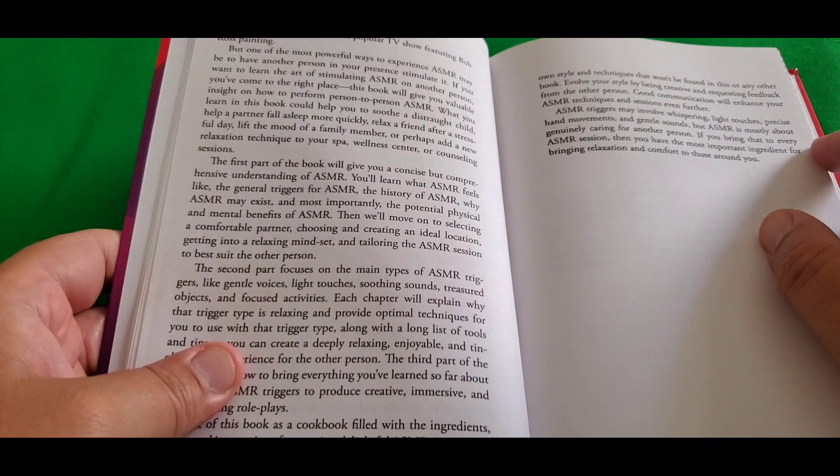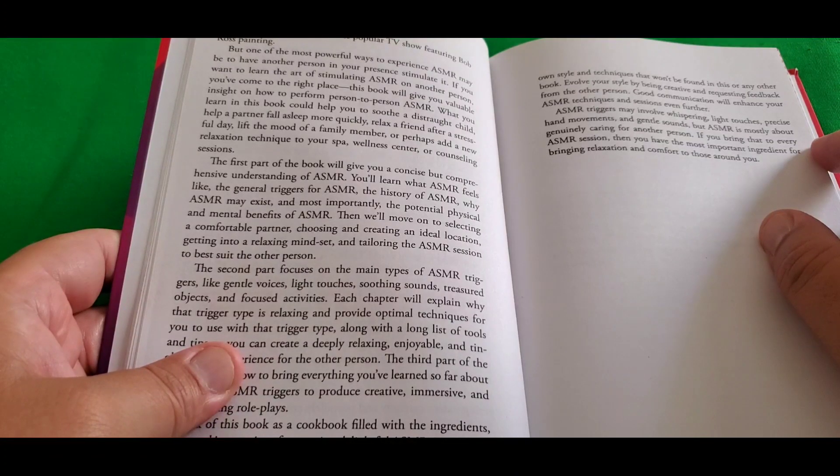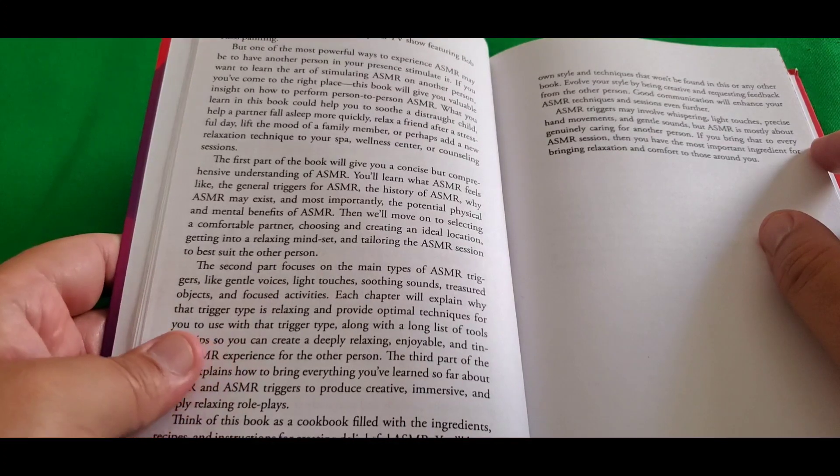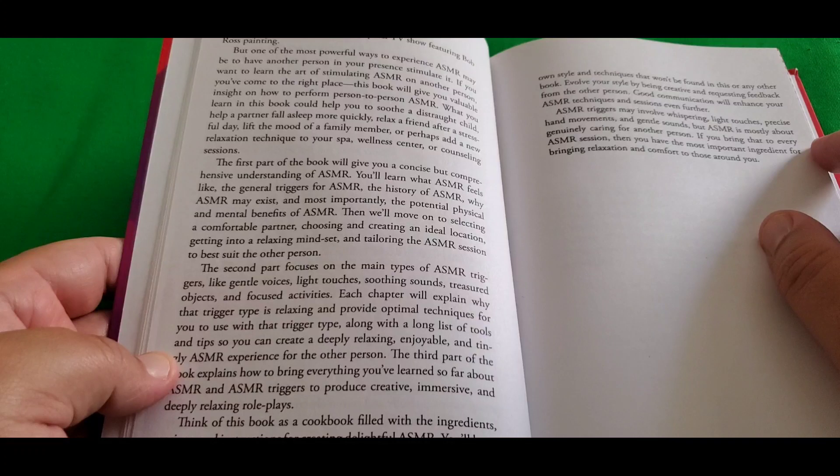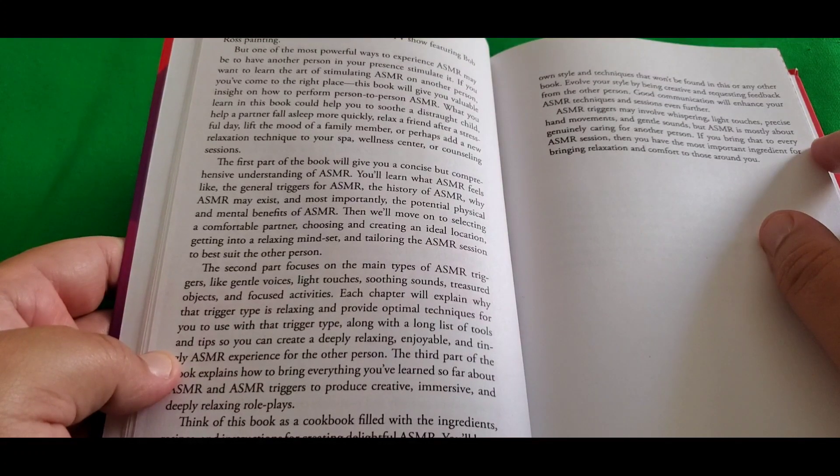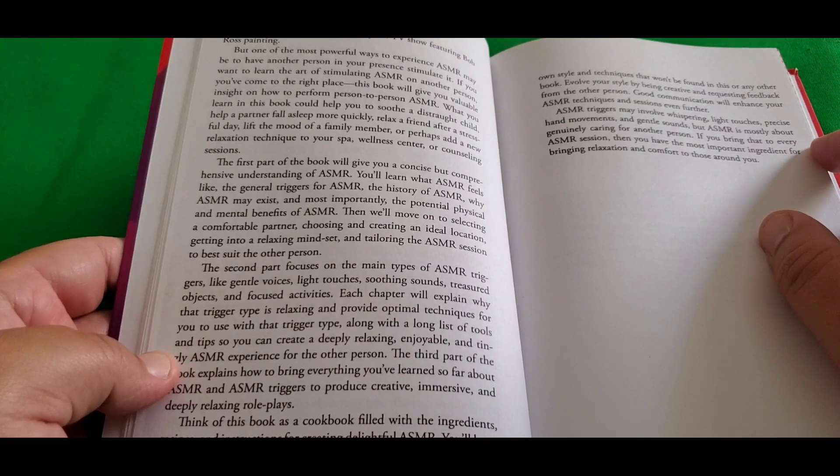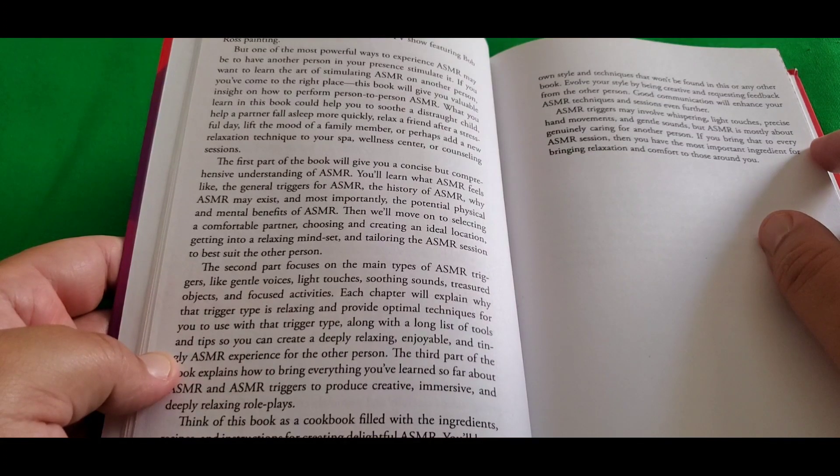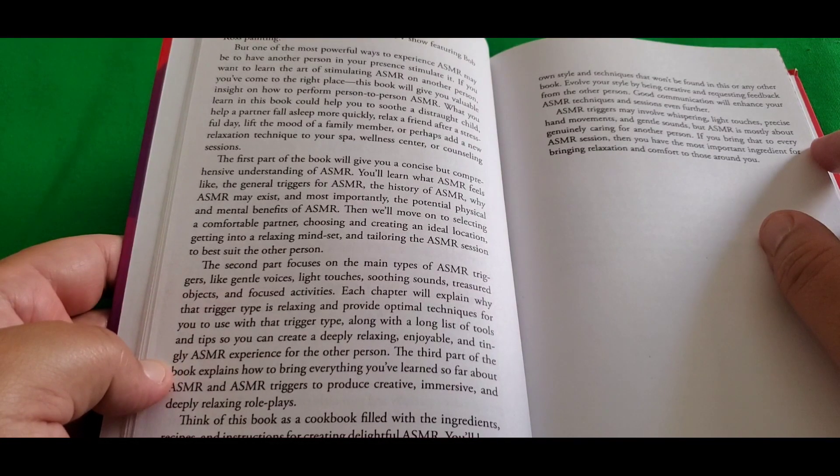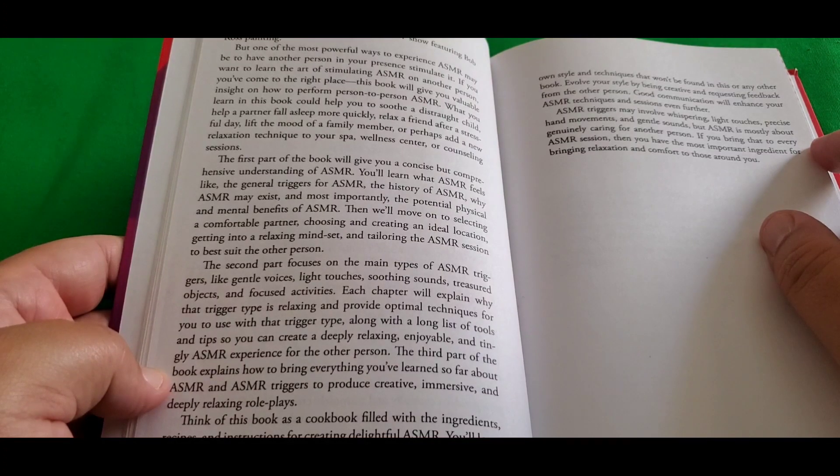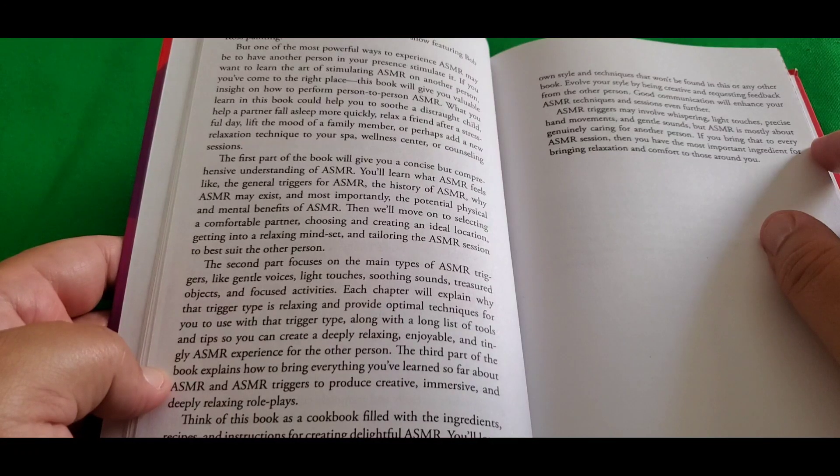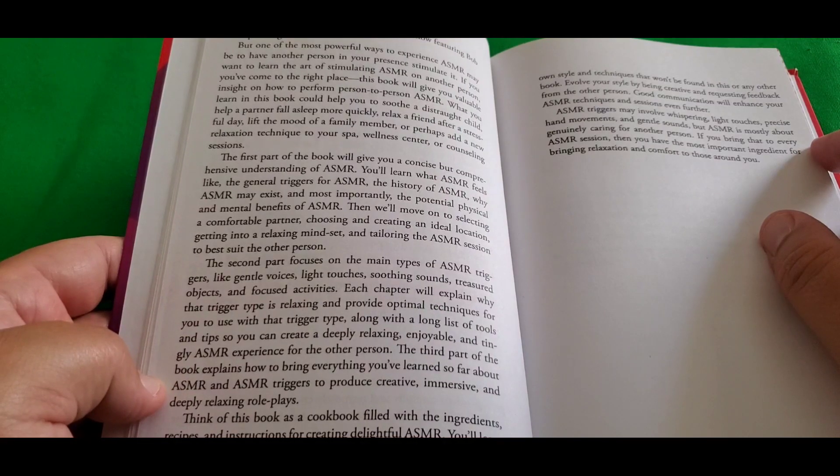The second part focuses on the main types of ASMR triggers like gentle voices, light touches, soothing sounds, treasured objects, and focused activities. Each chapter will explain why that trigger type is relaxing and provide optimal techniques for you to use with that trigger type, along with a long list of tools and tips so you can create deeply relaxing, enjoyable, and continual ASMR experiences for the other person.